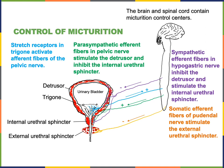There are also somatic efferent fibers involved in regulating micturition by stimulating contraction of the external urethral sphincter. The somatic efferent fibers of the pudendal nerve prevent micturition. Therefore, to enable micturition, the somatic efferent fibers will release less acetylcholine, causing relaxation of the external urethral sphincter.